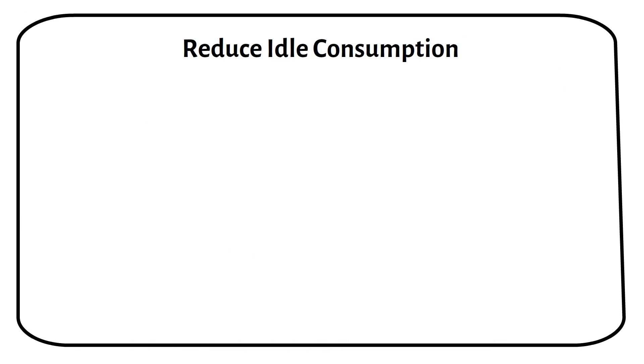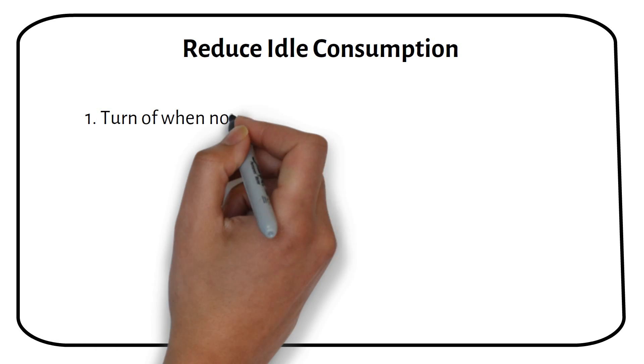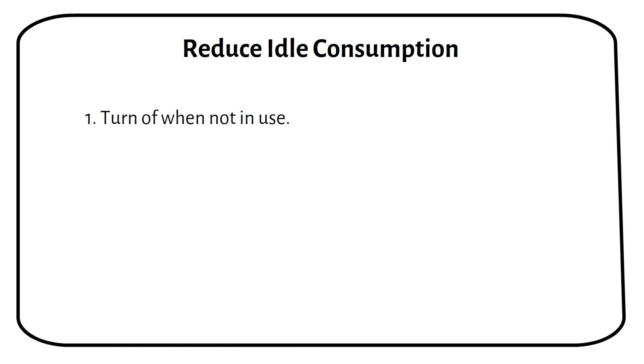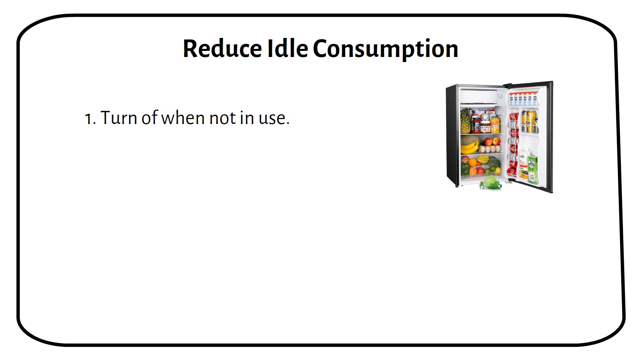You can reduce idle consumption by turning off the inverter when it's not in use. However, this is not always possible, especially if you have a fridge or other essential appliances running constantly.